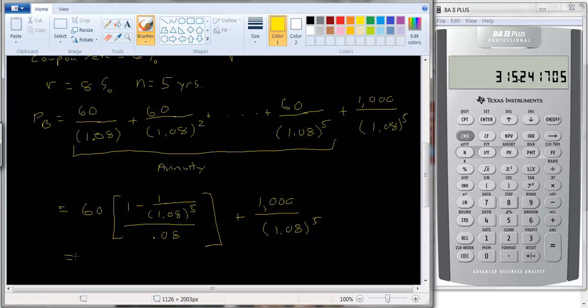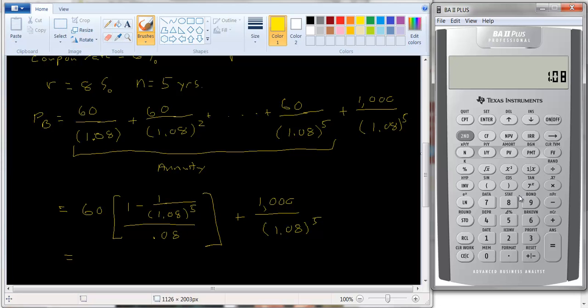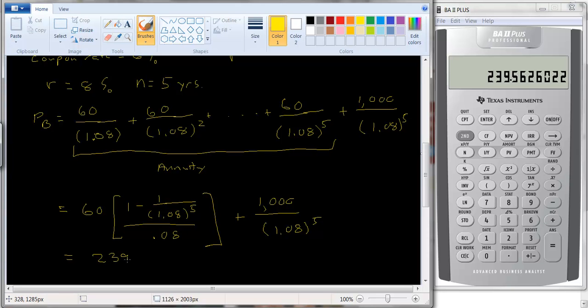So let's see if we can work that out here. 1.08 raised to the 5th power is 1.469, but we want 1 over that, so again hit the 1 over x key to flip it over. Change the sign, add it to 1, so that we have 1 minus this, and let's divide it by .08, so we get 3.9927 times the $60. And so we get $239.56 plus the present value of the $1,000 here.